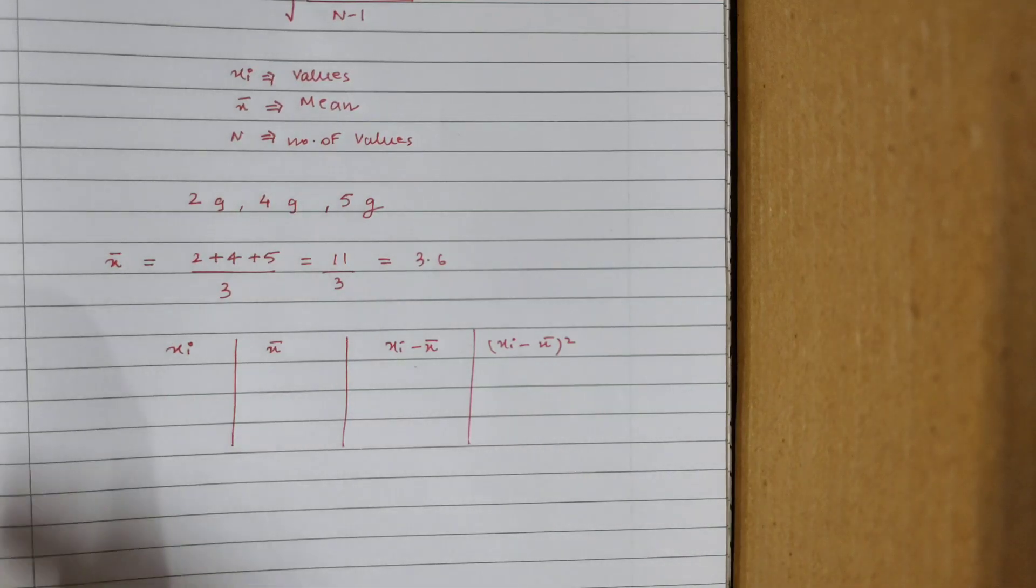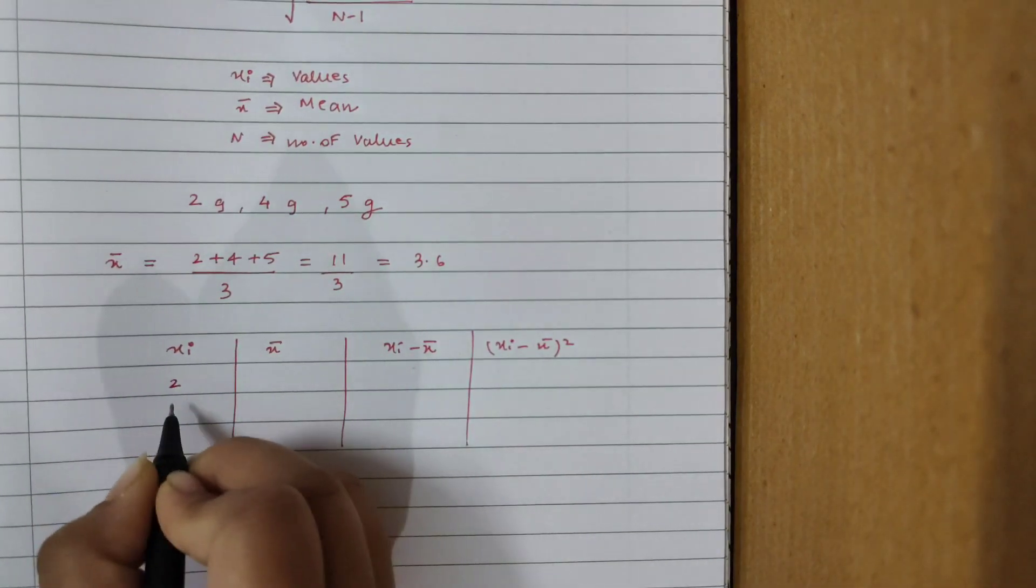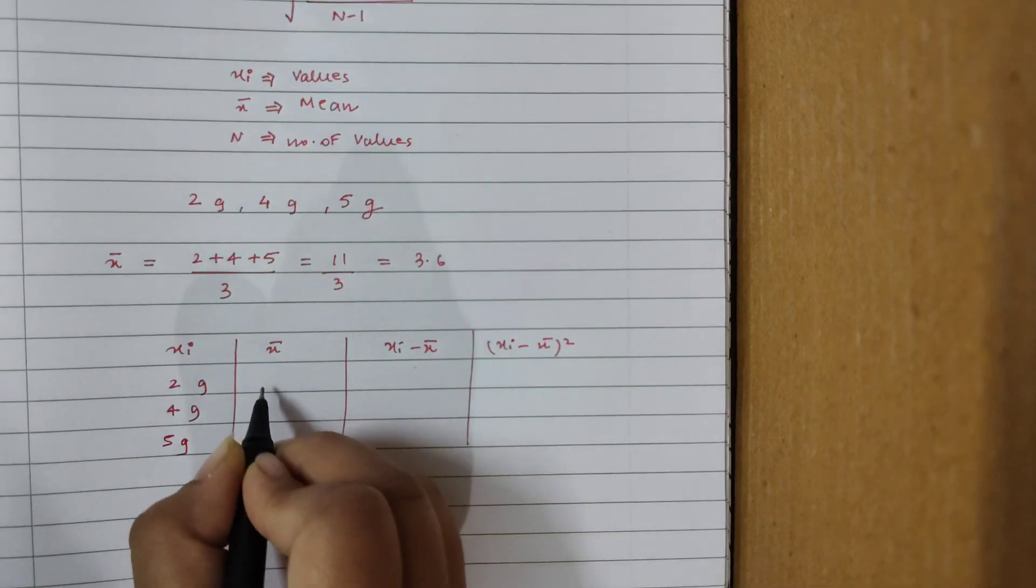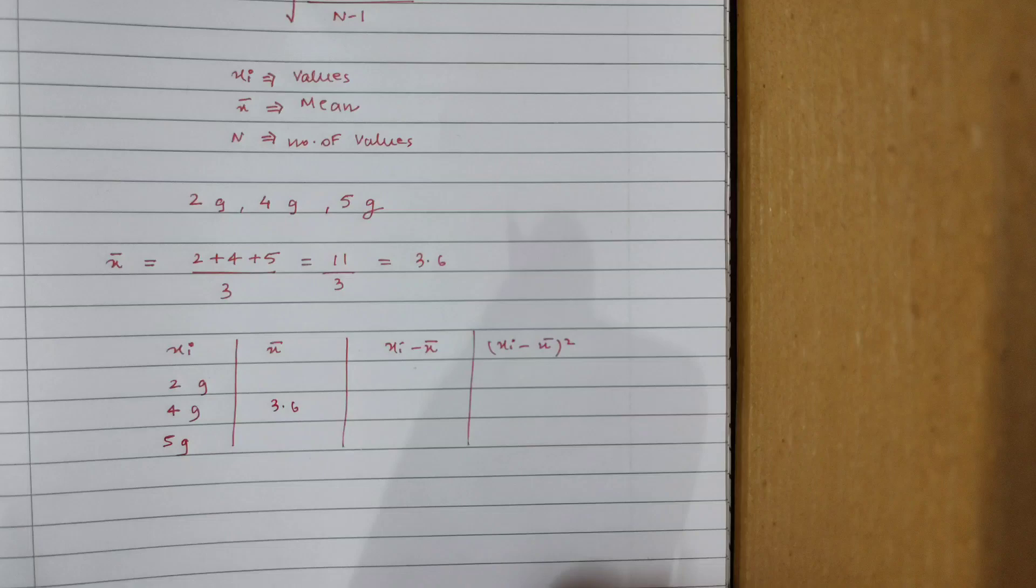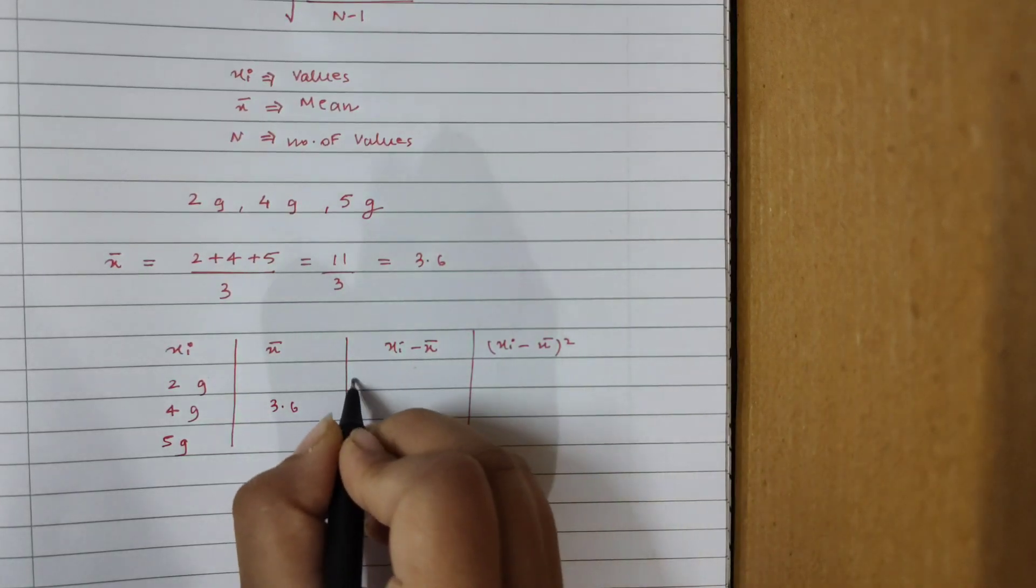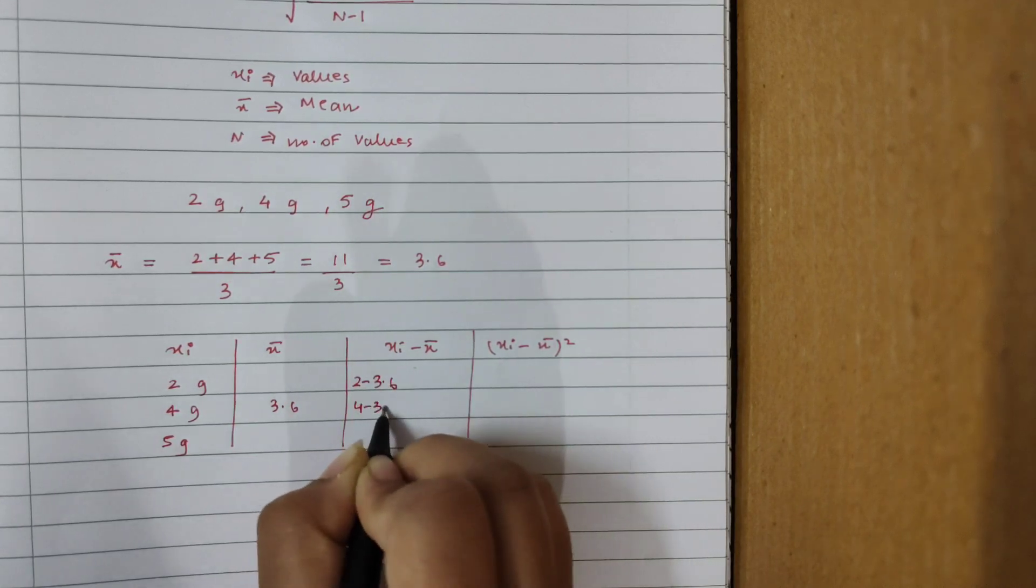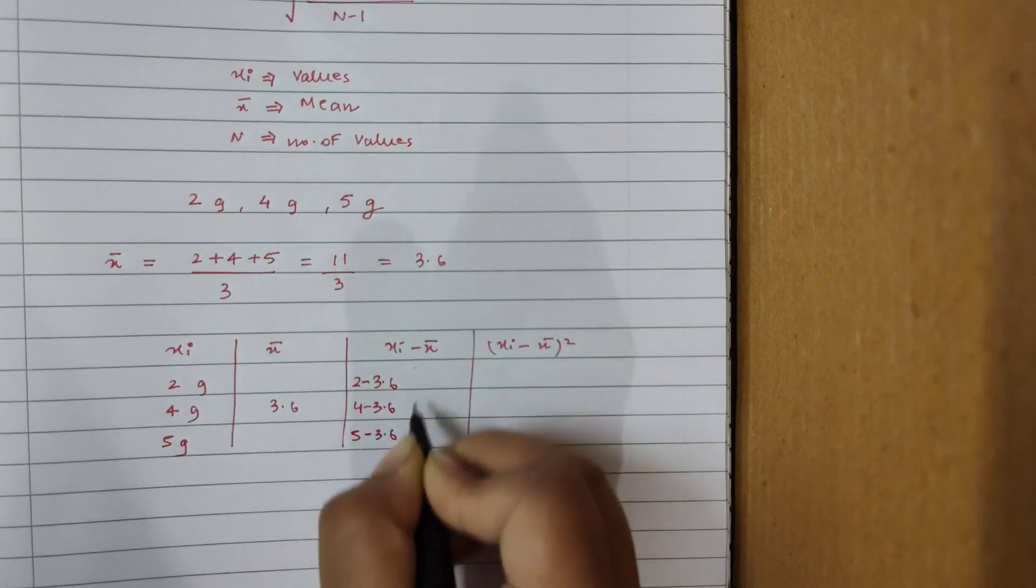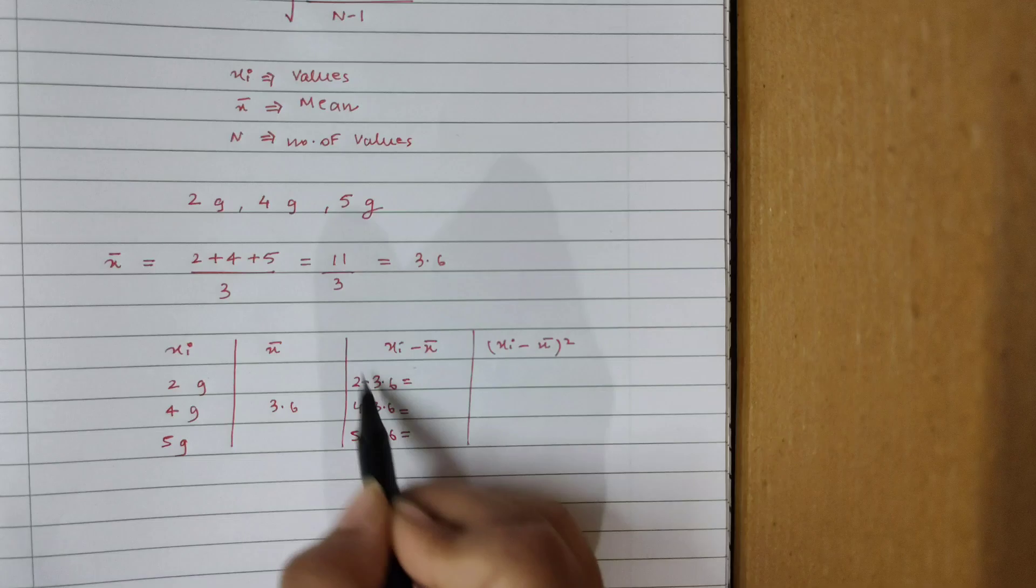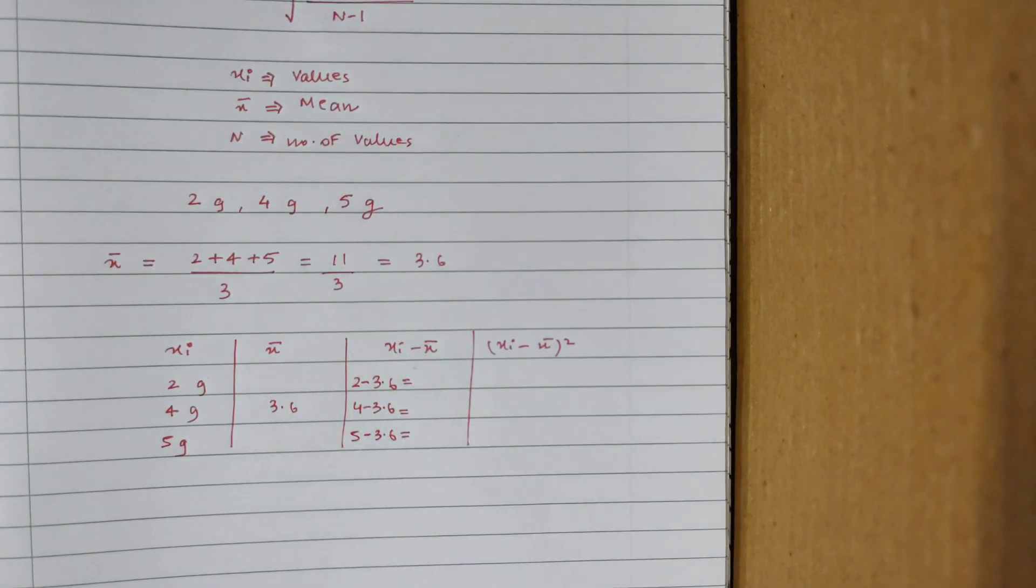Let's quickly fill the table. xi I already have: 2 grams, 4 grams, 5 grams. x bar I've already calculated, it's just going to be one value, which is 3.6. Now what do I do? xi minus x bar. So it's going to be 2 minus 3.6, 4 minus 3.6, and it's going to be 5 minus 3.6. So quickly write down these values over here. And remember, in this particular column, some of your values may be negative, but the negative sign is obviously going to go away because we are going to square it.